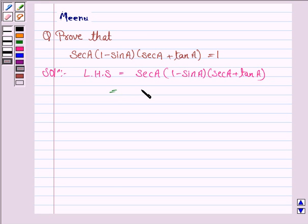Now secant A can be written as 1 upon cos A into 1 minus sine A. Again secant A is 1 upon cos A plus tan A which is sine A upon cos A.